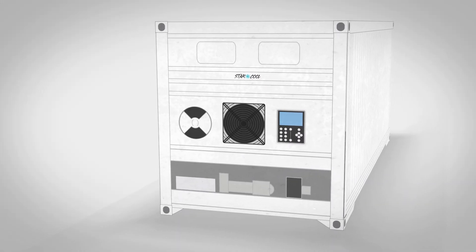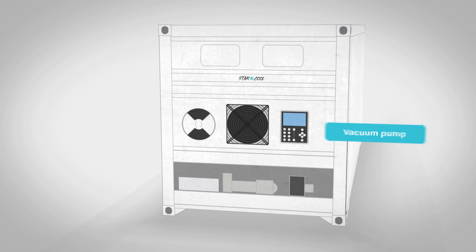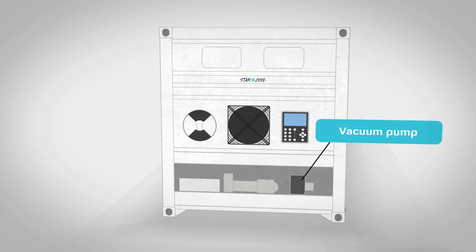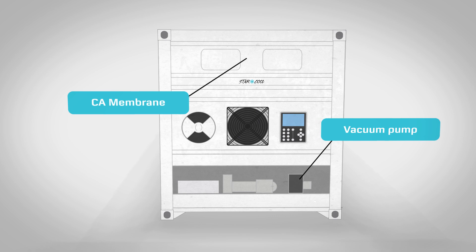StarCool CA relies on and uses the natural respiration of the produce, which consumes oxygen and produces carbon dioxide inside the sealed reefer. When the desired carbon dioxide level is reached, a vacuum pump removes excess carbon dioxide through a patented CA membrane.